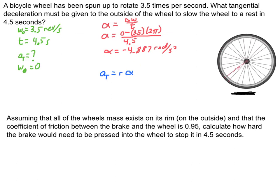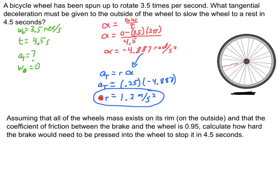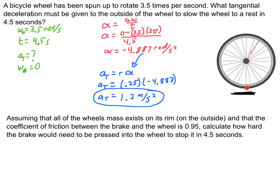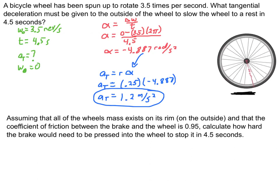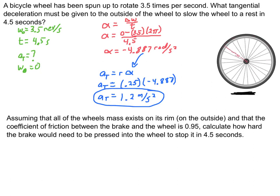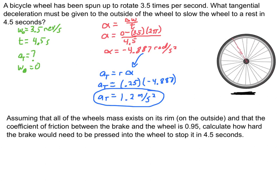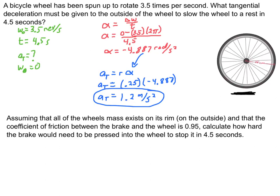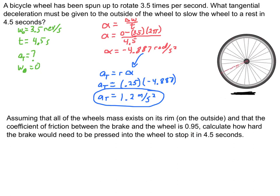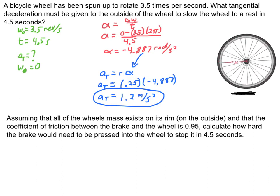Now I substitute that in and solve. The tangential acceleration needed comes out to 1.2 meters per second squared with sig figs. For the second part: assuming all the wheel's mass is on its rim on the outside - which is very important because if mass is distributed inside, things completely change and you'd need torque. The coefficient of friction between the brake and the wheel is 0.95. How hard do you need to press - what is the normal force - to stop the wheel in 4.5 seconds?